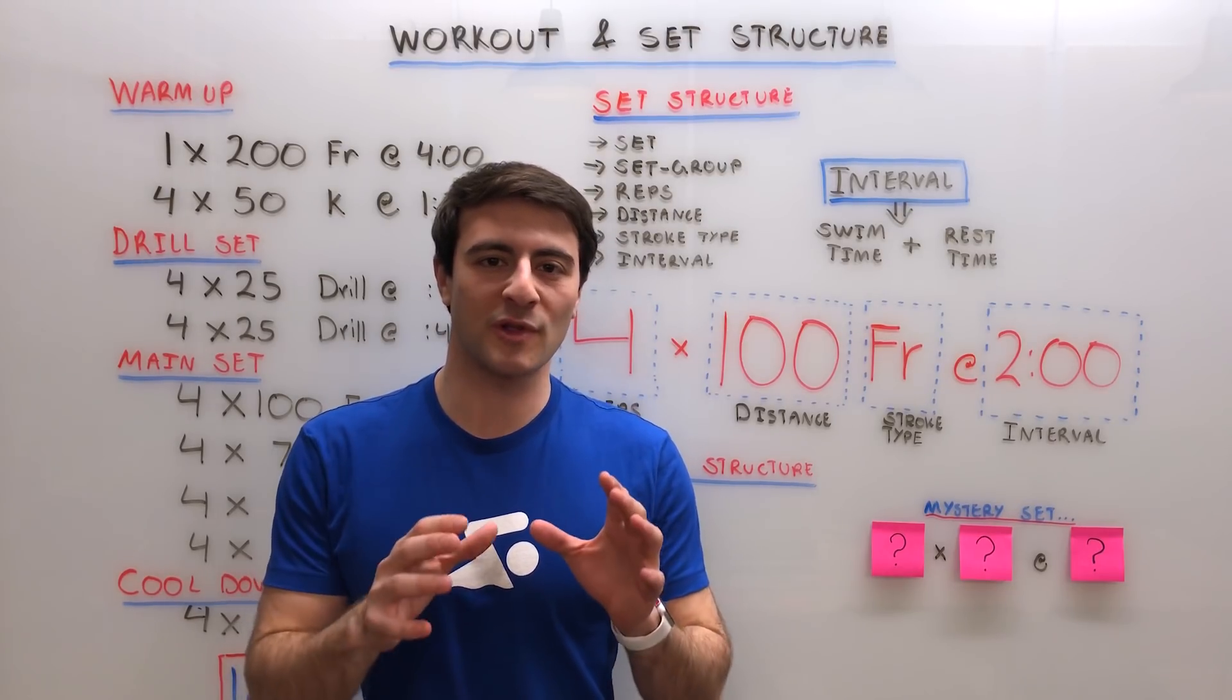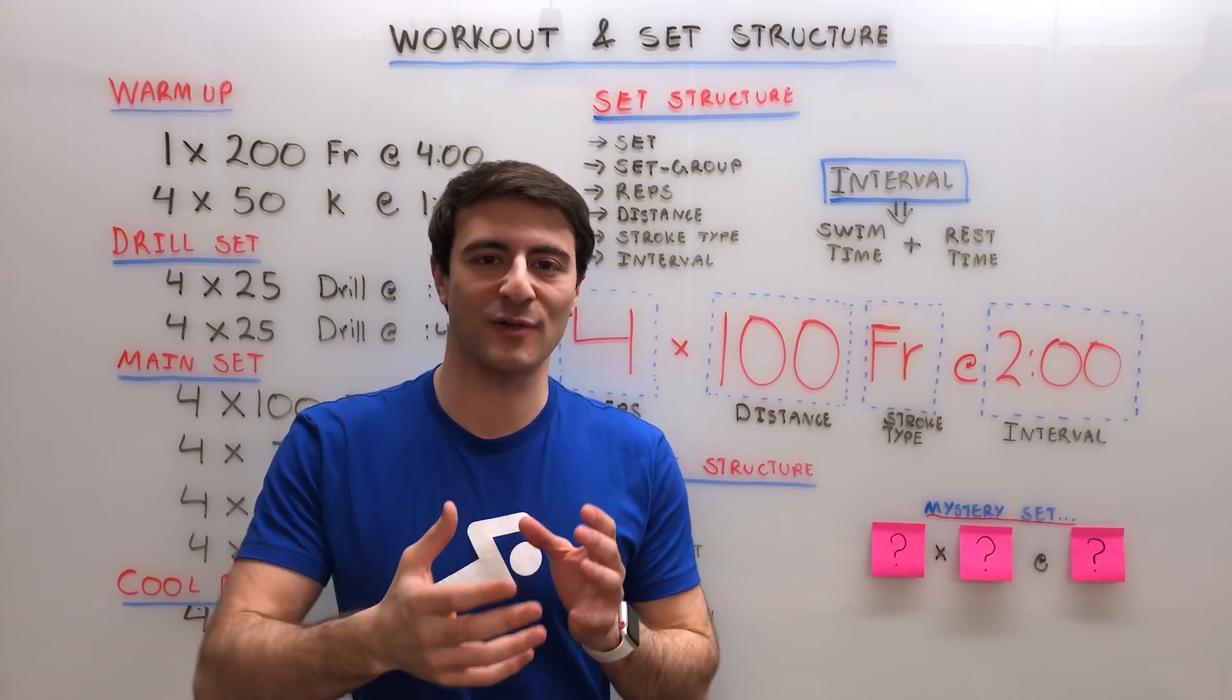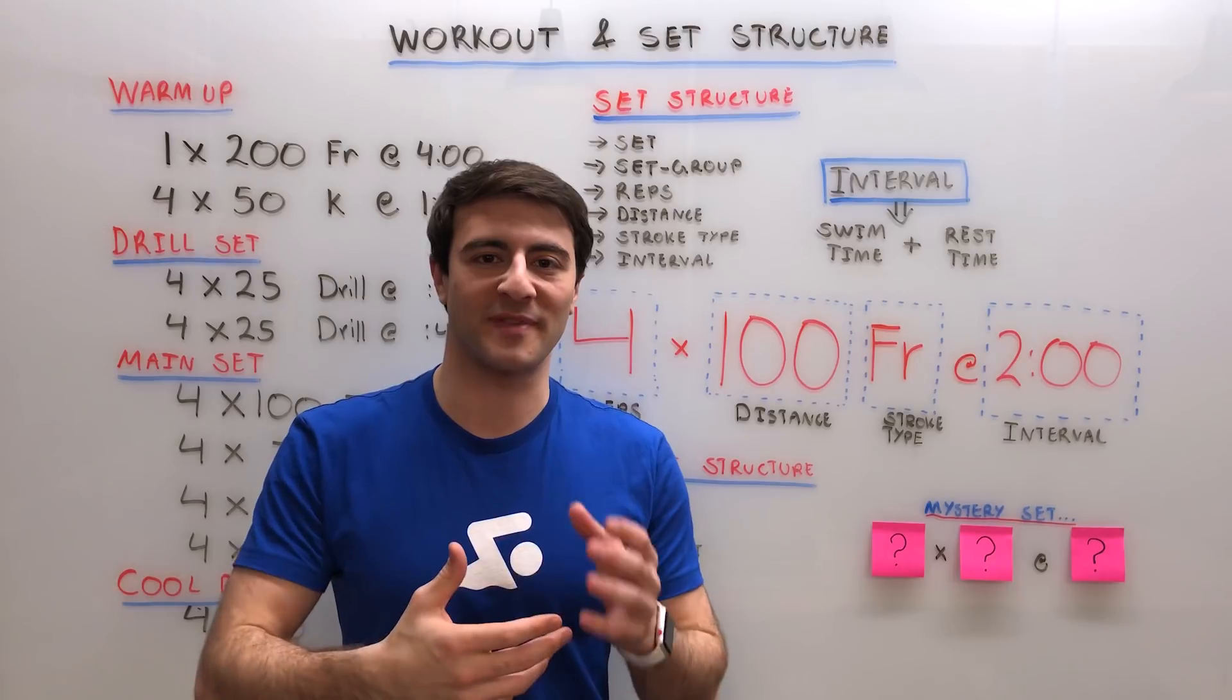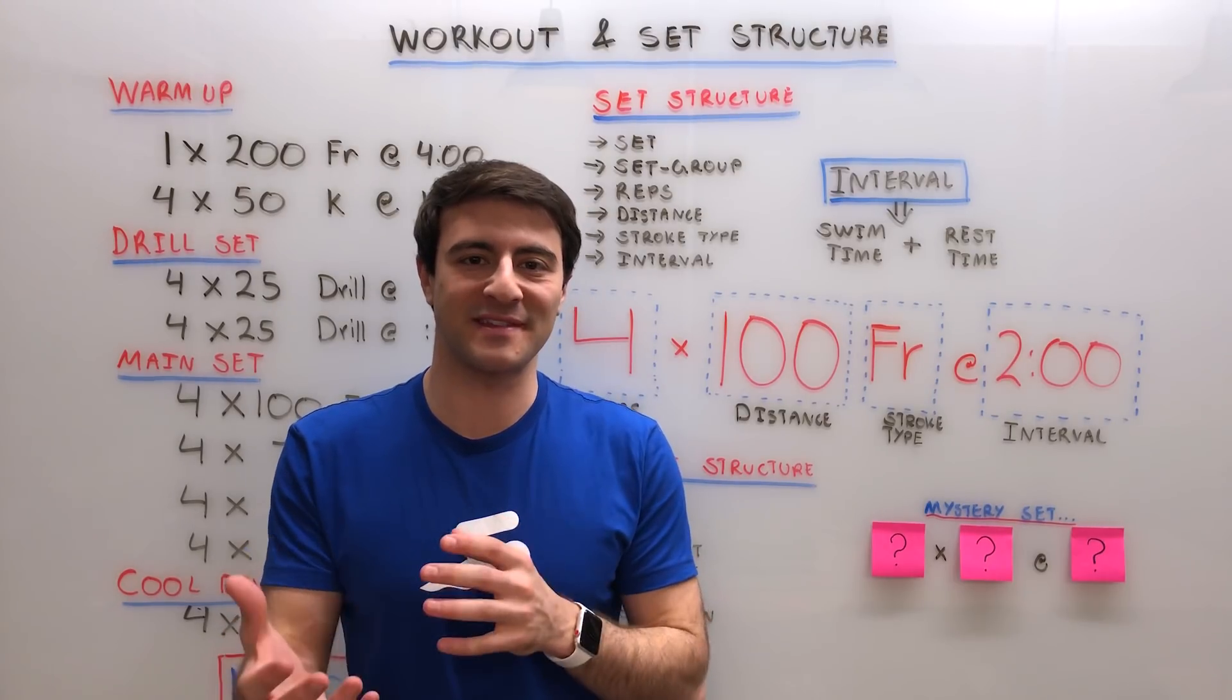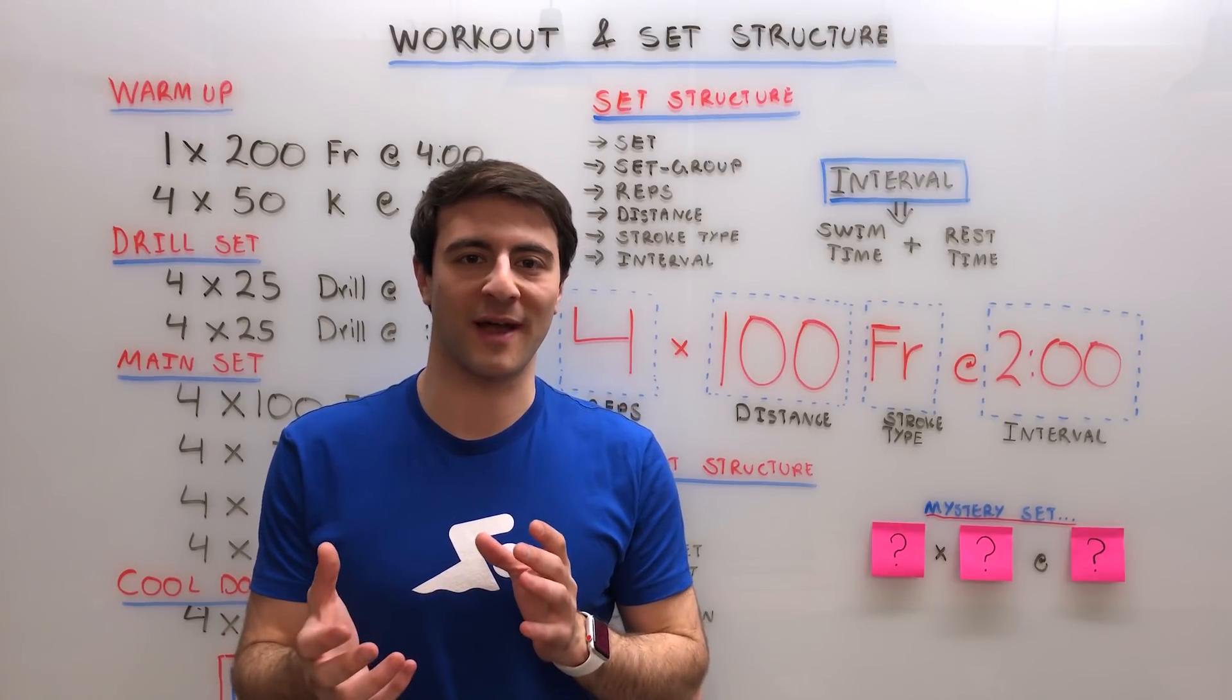To start, we look at the set. Now a set is a specific way that you'll do a certain number of repetitions over a certain distance with a certain stroke type with a specified amount of rest.